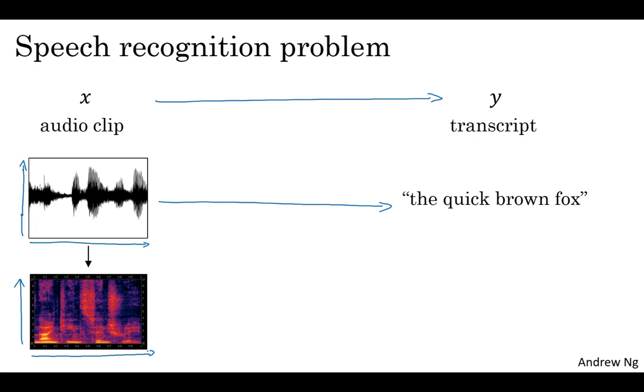One of the most exciting trends in speech recognition is that once upon a time, speech recognition systems used to be built using phonemes, and these were hand-engineered basic units of sound. The quick brown fox represented as phonemes - linguists used to write out these basic units of sound and try to break language down into these units. Linguists used to hypothesize that writing down audio in terms of these basic units of sound called phonemes would be the best way to do speech recognition.